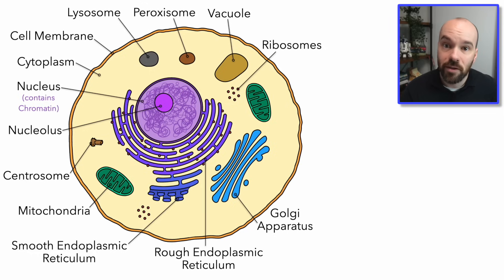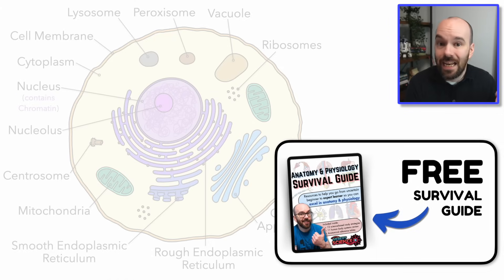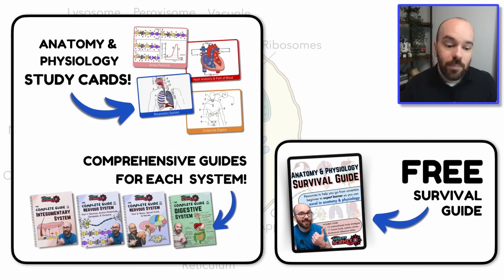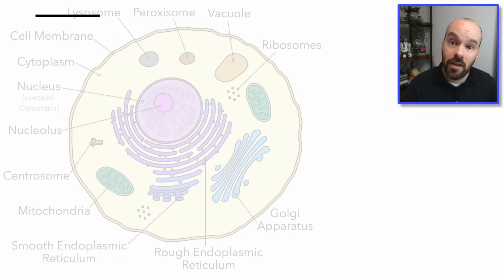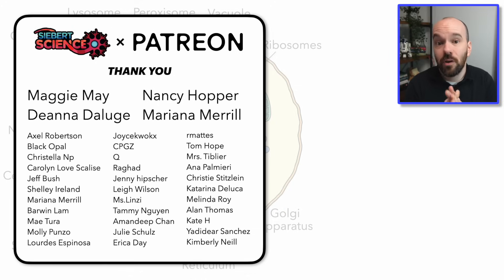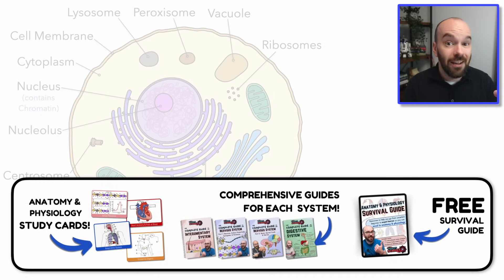Here are all those organelles back so you can check what you remembered. If you're learning all this stuff for a class, the only way to learn it all is to practice it and use the best strategies. I have a free A&P survival guide — link in the description — with strategies for how to learn A&P and make sure that information sticks. I've also got A&P study cards, including blank versions of the diagram in this video, and comprehensive unit guides for the nervous system, digestive system, and more. Special thanks to my patrons on Patreon and my YouTube channel members. Thanks again for watching this video and learning about the cell — hopefully you understand the cell better than you ever have.